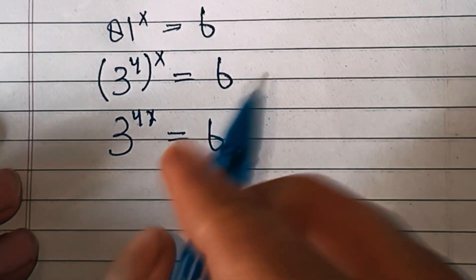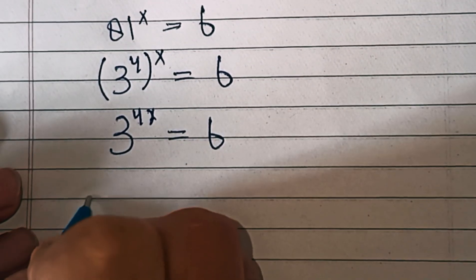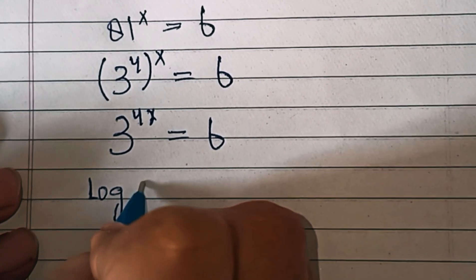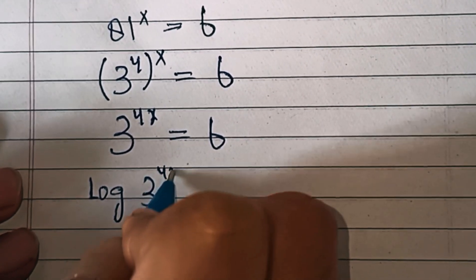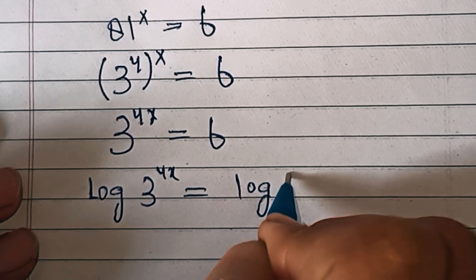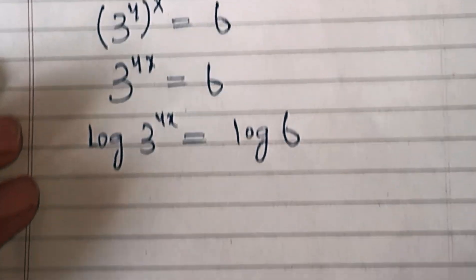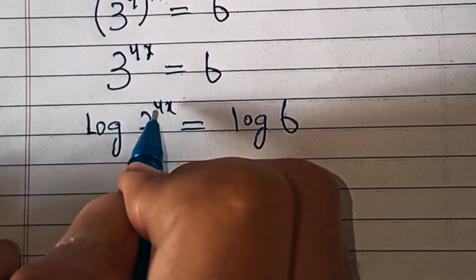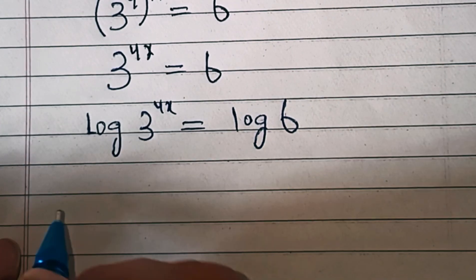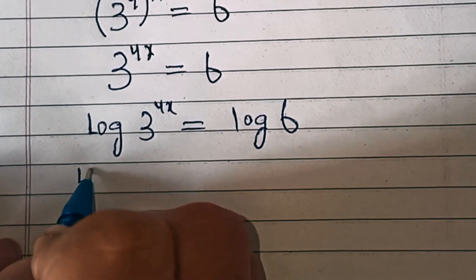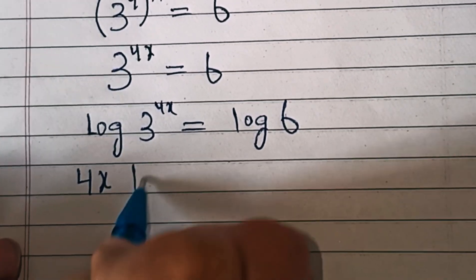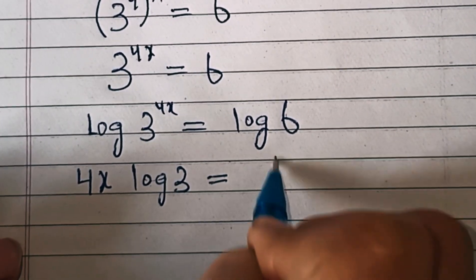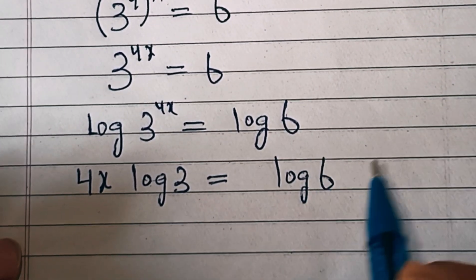In the next step we'll apply log on both sides, so log of 3 power 4x equals log of 6. The power 4x moves to the base, so 4x log of 3 equals log of 6.